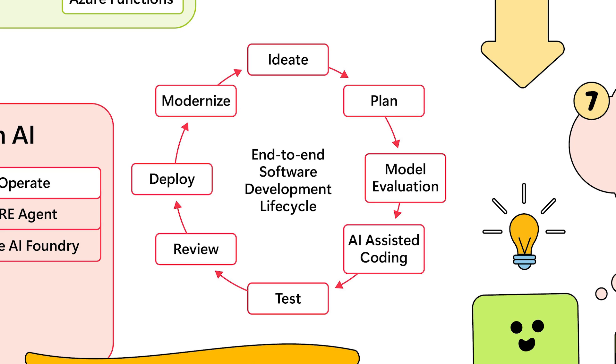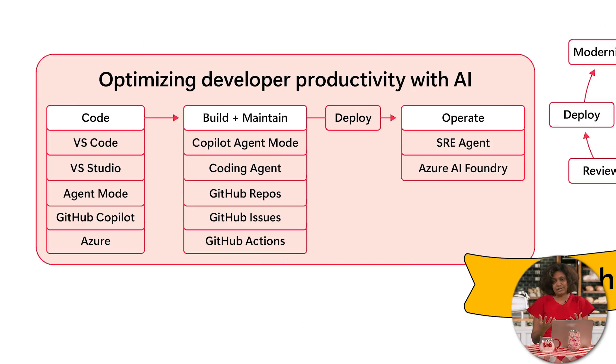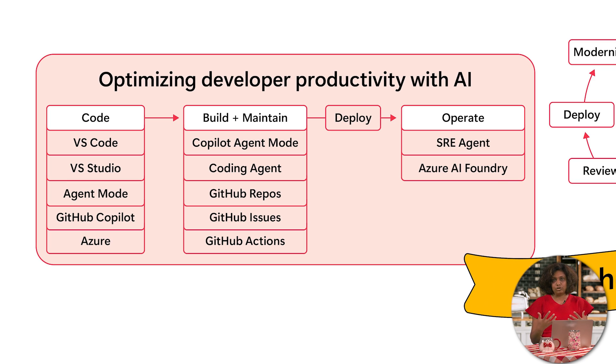The rest of the SDLC is the same: test, review, deploy, modernize, continue the process, and iterate. With that context and framework in mind, let's look at optimizing developer productivity with AI. What are the tools developers would use? I've categorized them in three categories.